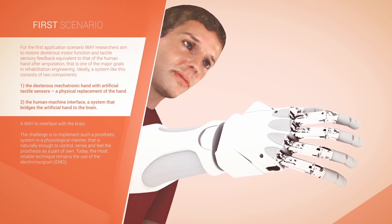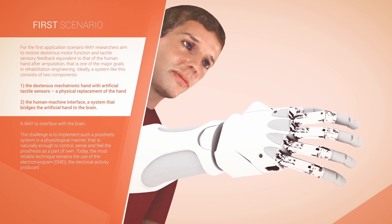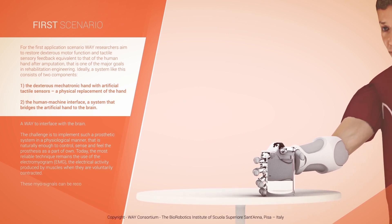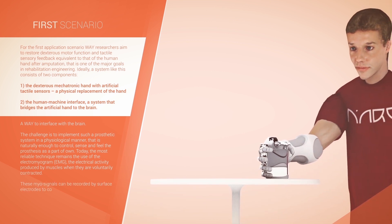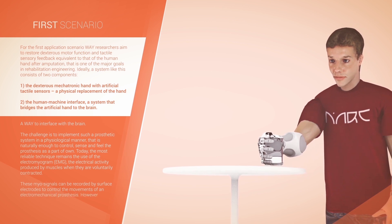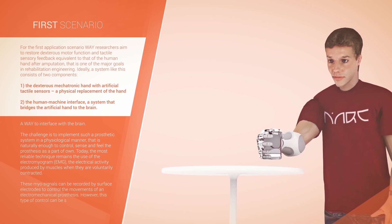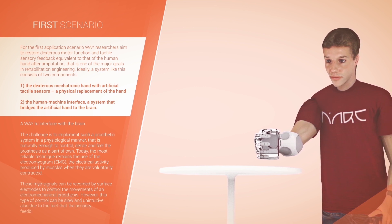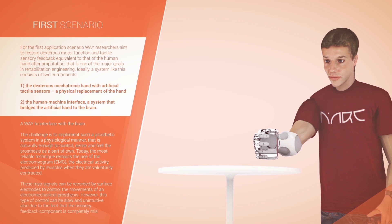Today, the most reliable technique remains the use of electromyogram, EMG, the electrical activity produced by muscles when they are voluntarily contracted. These myosignals can be recorded by surface electrodes to control the movements of an electromechanical prosthesis. However, this type of control can be slow and unintuitive, also due to the fact that the sensory feedback component is completely missing.